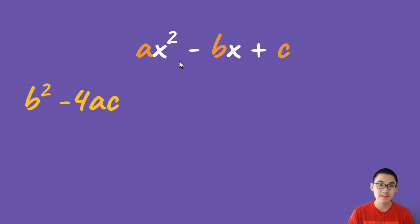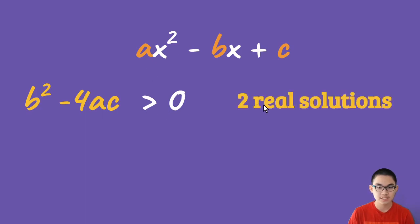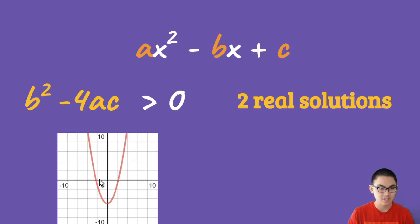And so there are three things that you should remember with the discriminant. The first thing is when it is larger than zero. So when the discriminant is larger than zero, it means that this function has two real solutions, or it touches the x-axis at two different points.